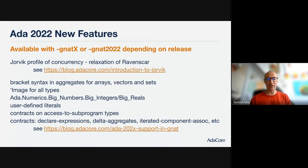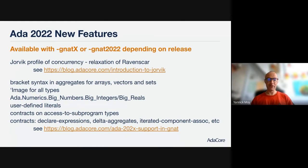There are many things that make it easier to express things simply and bring out the beauty of programs. You can now use bracket syntax in aggregates for homogeneous aggregates — so for arrays, vectors, and sets of the standard containers. You can use the 'Image attribute to display an image of a value for all types, which is generated automatically, and you can override it for certain types. The standard library now provides big integers — unbounded integers — and big reals, which are actually rationals. These can be quite useful, in particular for specifying numerical APIs.